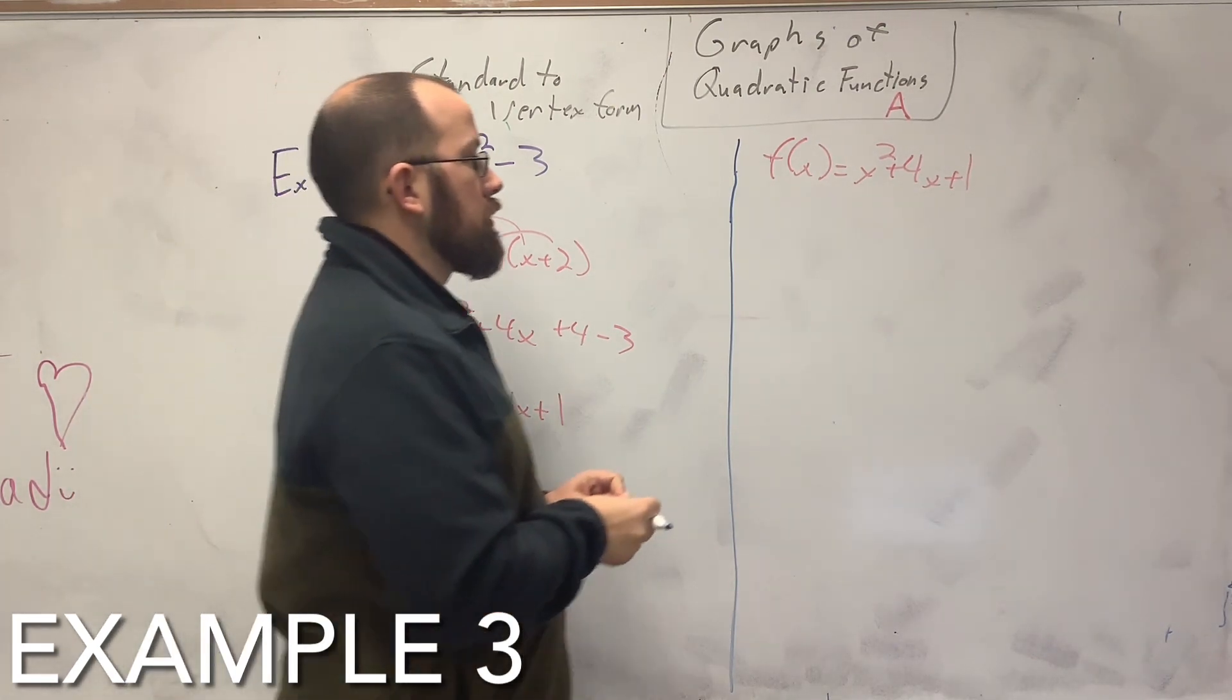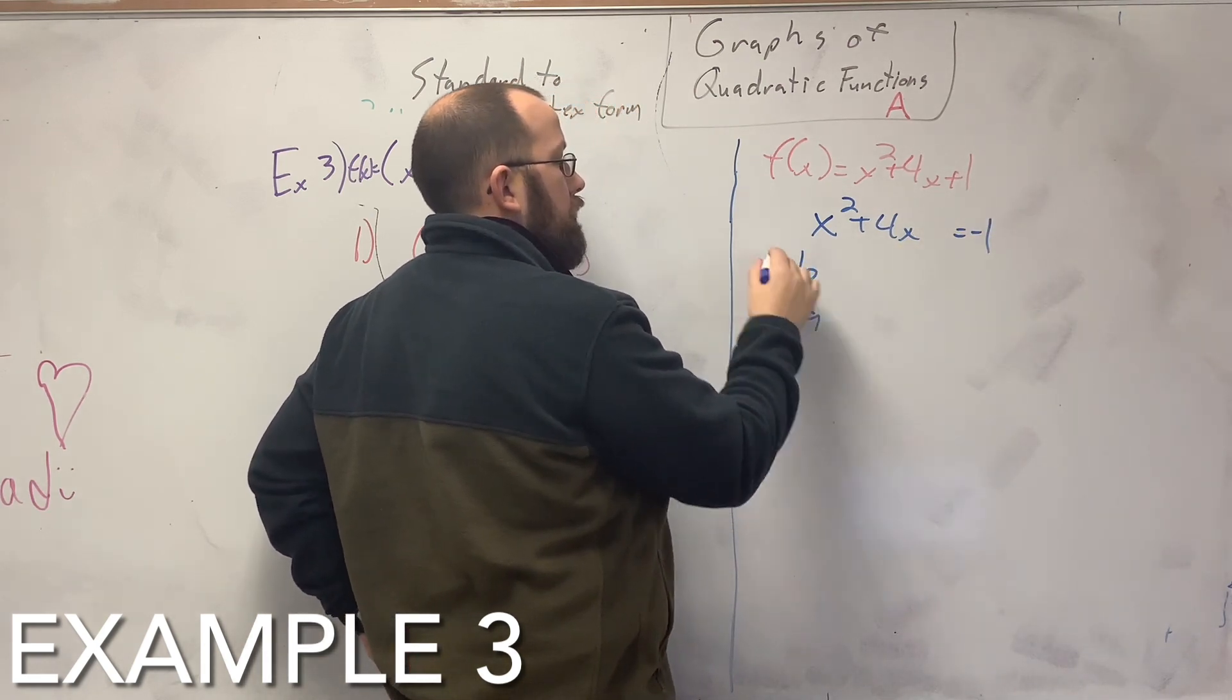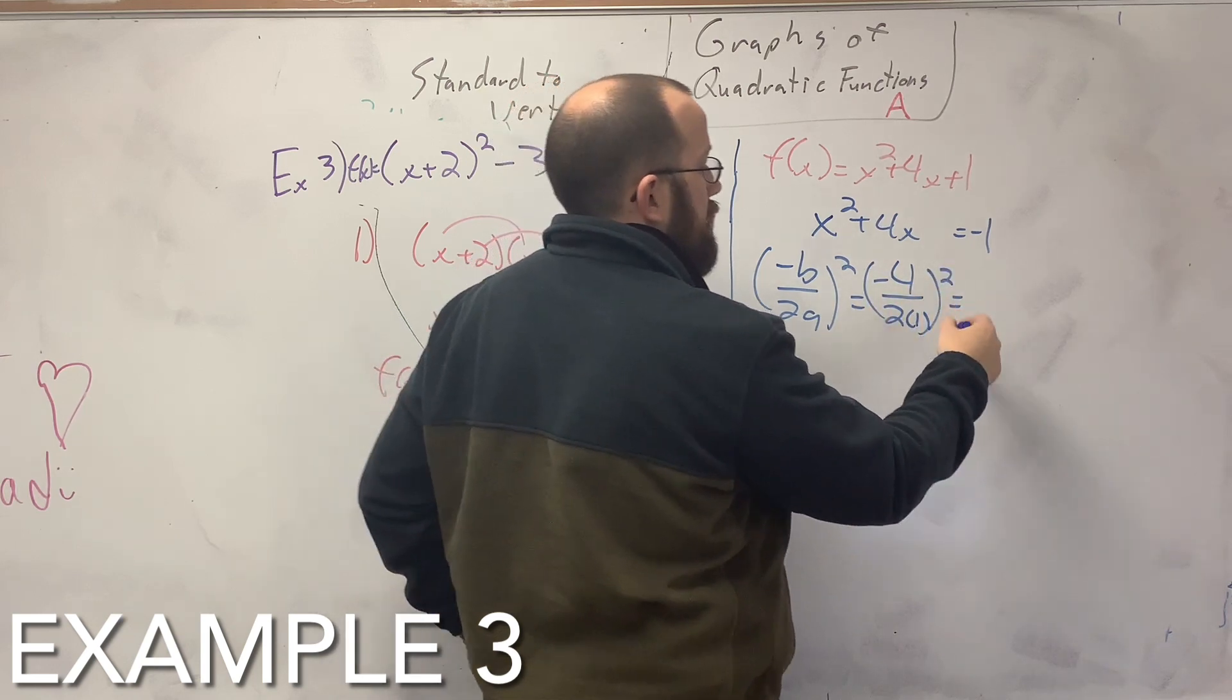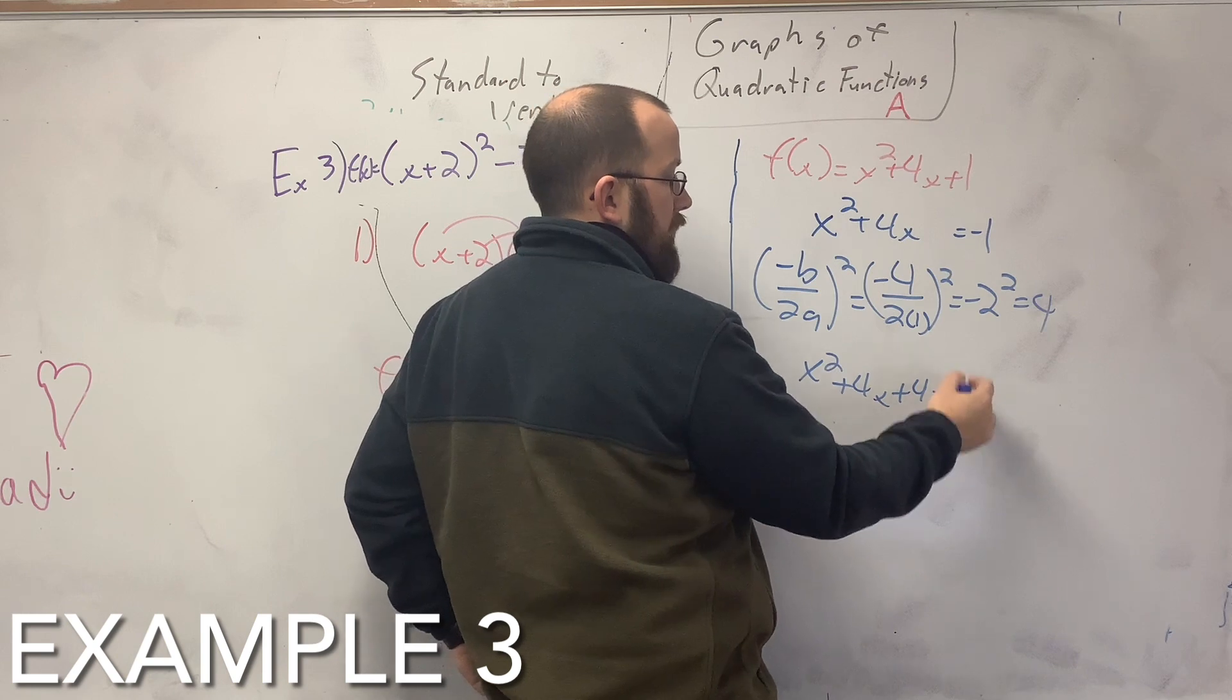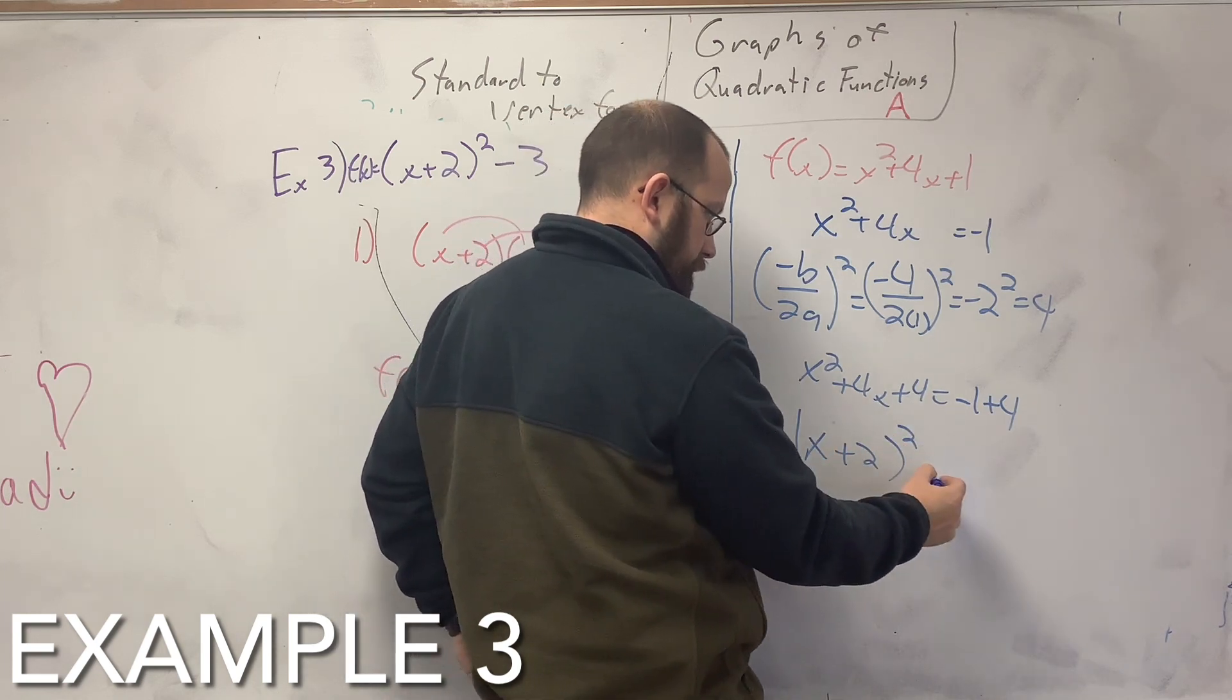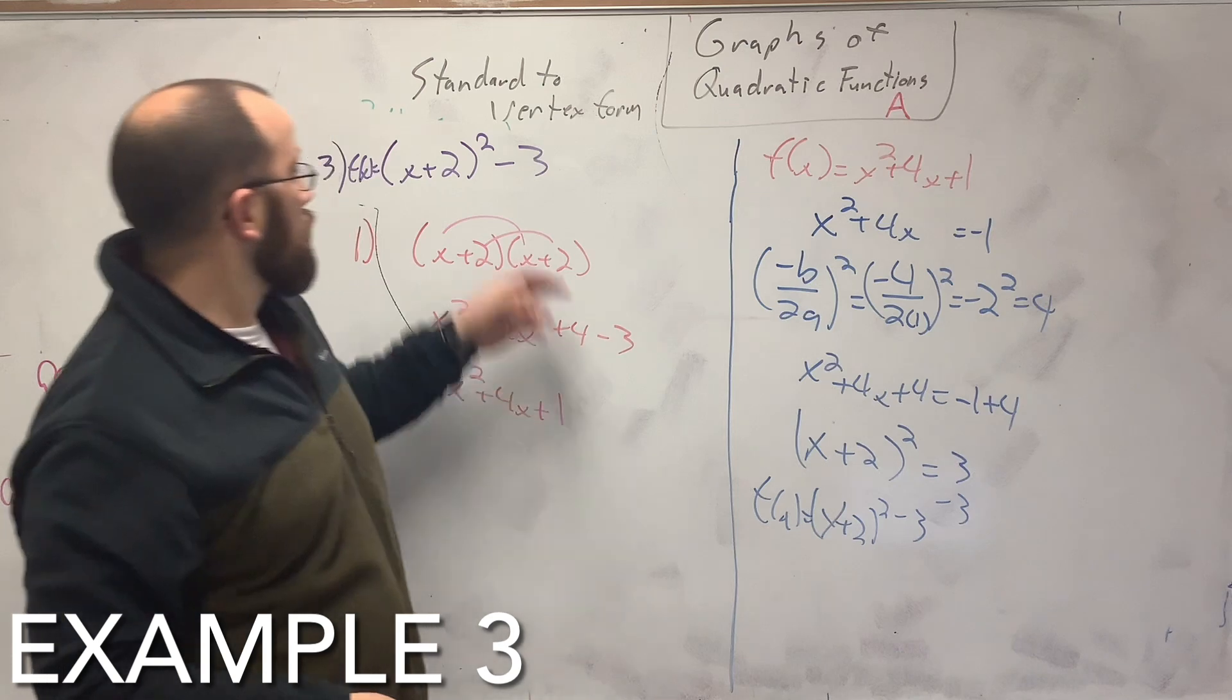And I'm just going to do it all in one swoop. I'm gonna get negative b over 2a squared, gives us 4. Negative 4 over 2 times 1 squared gives us negative 2 squared, which is 4. So x squared plus 4x plus 4, because I'm adding it to both sides, equals negative 1 plus 4. So then x plus 2 squared minus 3 is our original function, which we get.